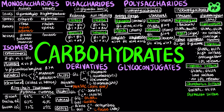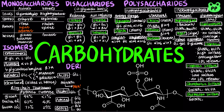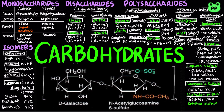Dermatan sulfate consists of repeating units of GlcNAc and iduronate. It is found mostly in the skin but also in blood vessels, heart valves, tendons, and lungs. Keratan sulfate consists of repeating units of GlcNAc and galactose. It doesn't have a uronic acid and its sulfate content is highly variable. Keratan sulfates are present in cornea, cartilage, bones, and a variety of horny structures formed from dead cells, such as horns, hairs, hooves, nails, and claws.